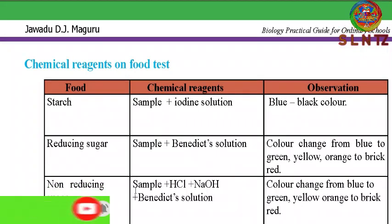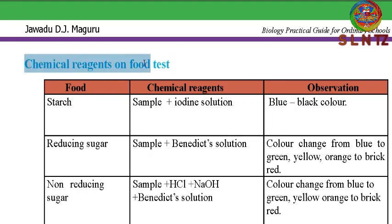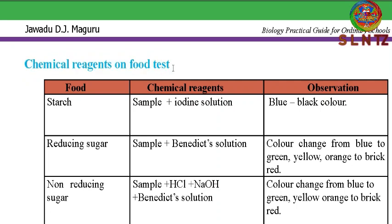We use chemical reagents to test for these food substances. Just as when you go to the hospital and they use a reagent to test for malaria or typhoid to identify the cause of disease, here in food tests we also use reagents. In order to test for starch, we need a sample and the reagent — which is iodine solution.